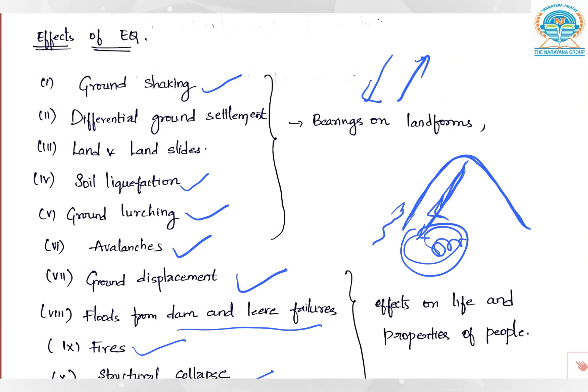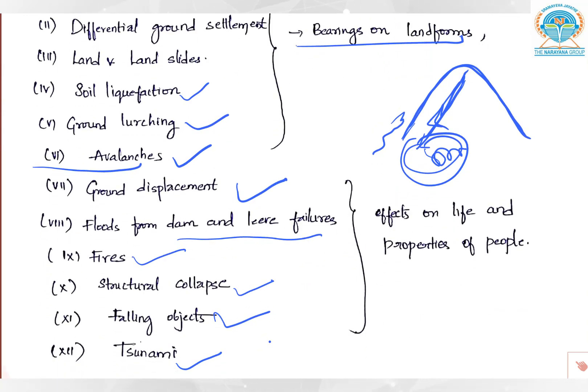If we see all the reasons, the first six all have bearings on landforms. They all directly deal with the lithosphere, land, and crust. But the rest of the reasons can have direct effect on life and properties of people. You can remember this differentiation: which effects affect people and properties more, and which affect only land.